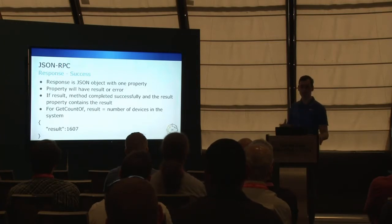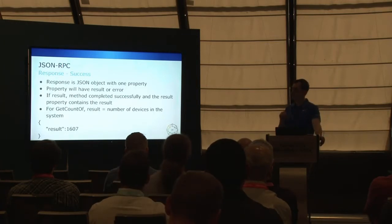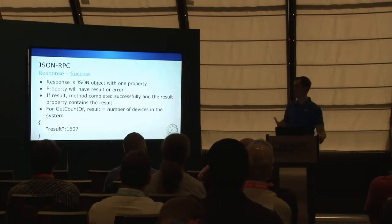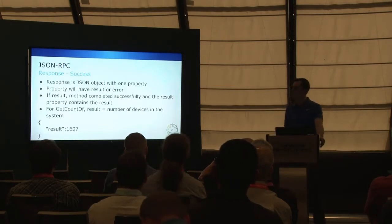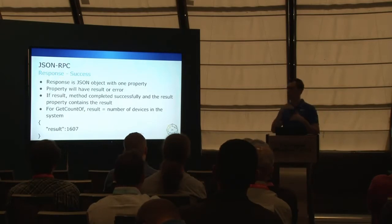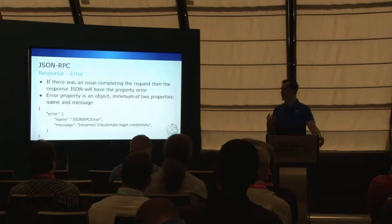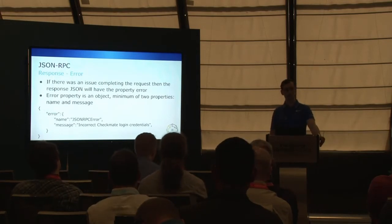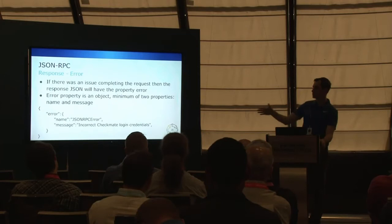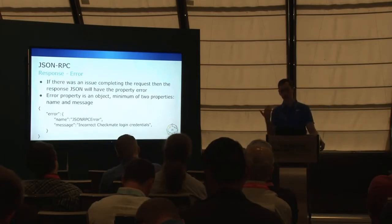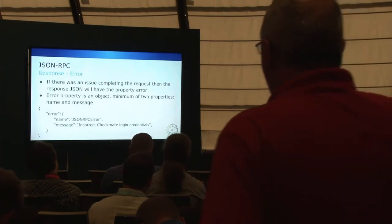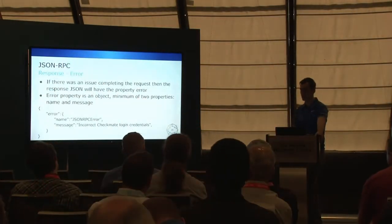If there's a successful result, you get a JSON object with a single property called 'result', and the value is the return value of the method call — for GetCountOf it's just a number, like 1607, but for getting all devices it would be an array of device objects. If there's an error, you get a JSON object with a single property called 'error', which has at minimum two properties: name and message. For example, if your login credentials are invalid or your session has expired, you'll get that error back and know you need to re-authenticate.